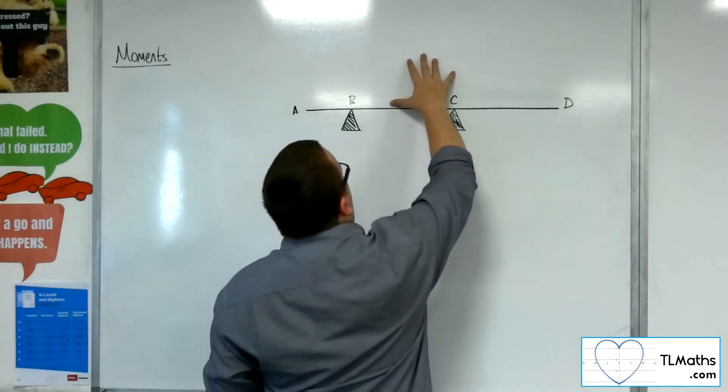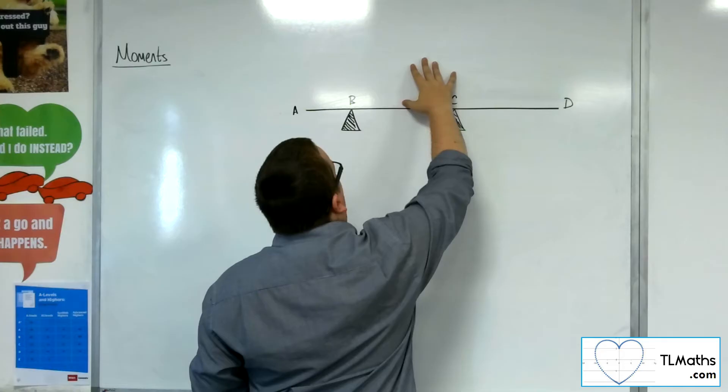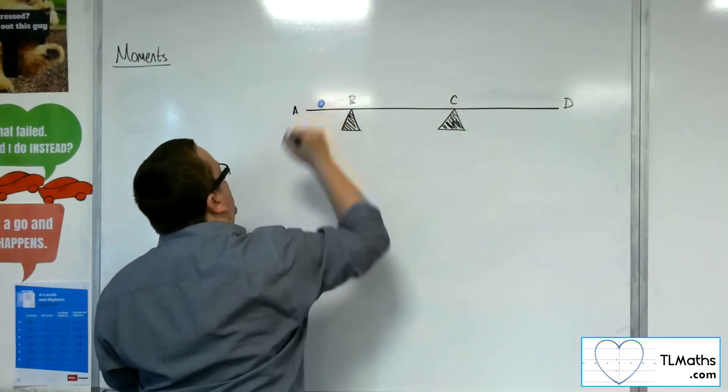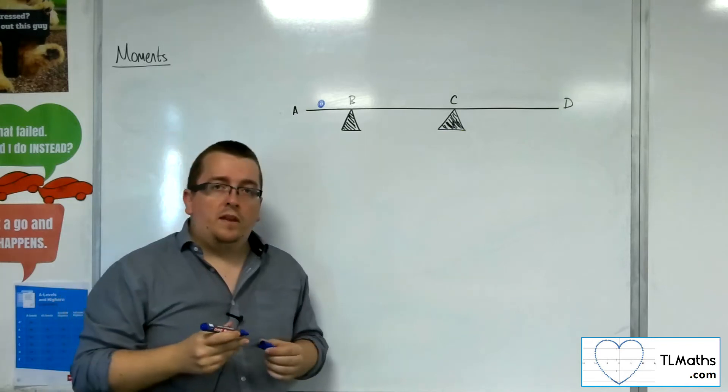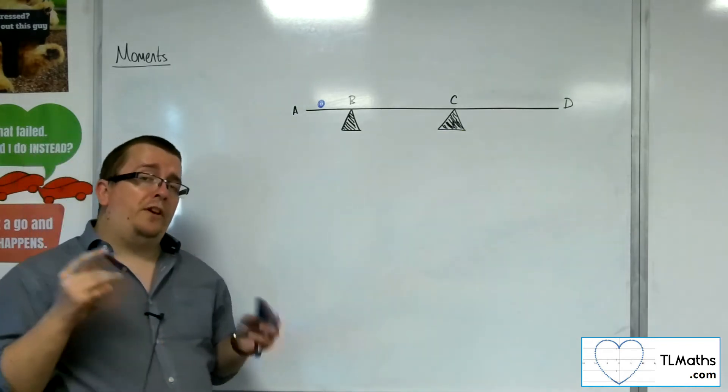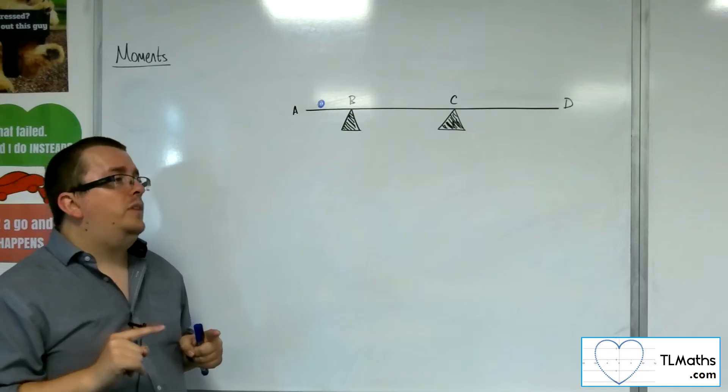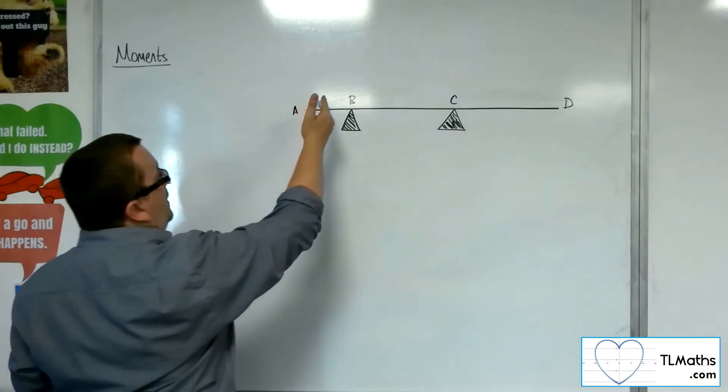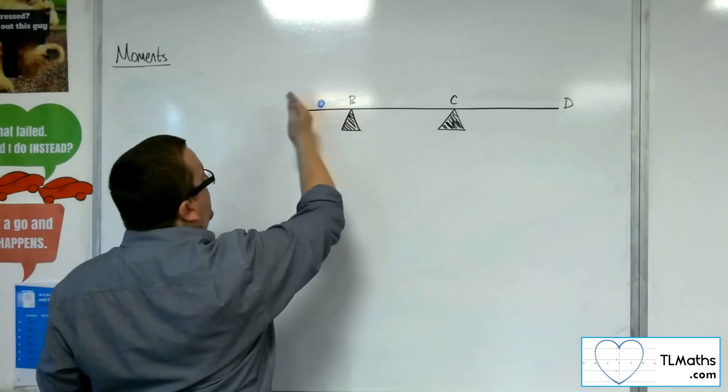Now, if instead I place the particle here, let's say between A and B, then you could imagine that for certain weights, if the particle, depending on where the particle is placed—if it's placed furthest away from B,